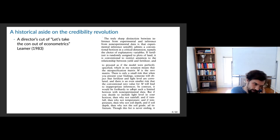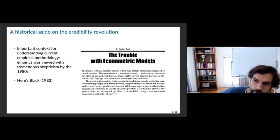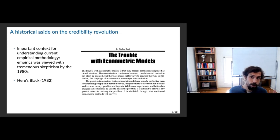Just to give another example — from Nobel Prize winner Fischer Black in 1982: 'The trouble with econometric models is they present correlation disguised as causal relations. The more obvious confusions between correlation and causation can often be avoided, but there are many subtle ways to confuse the two. The language of econometrics encourages this confusion.'